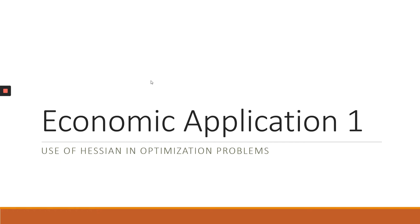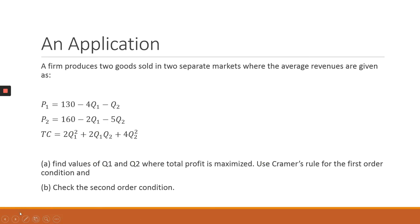The focus of this video is to demonstrate how we use behavior in solving optimization problems. We are going to work through an example and show how we can combine matrices, the use of Cramer's rule, as well as behavior in solving this specific optimization problem.